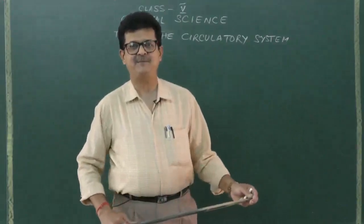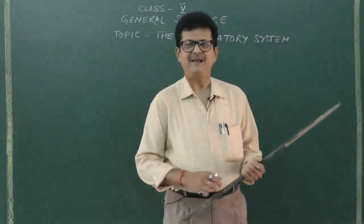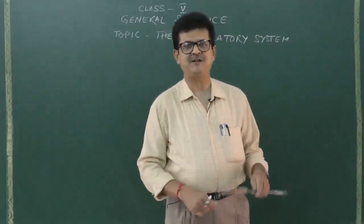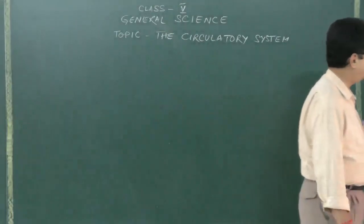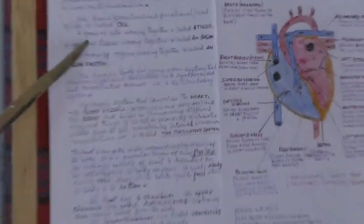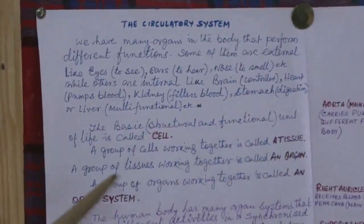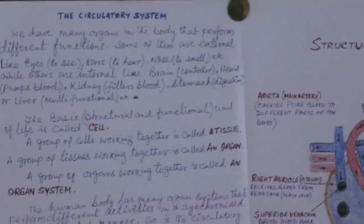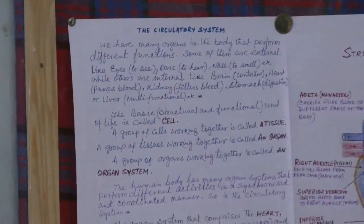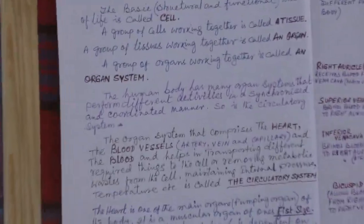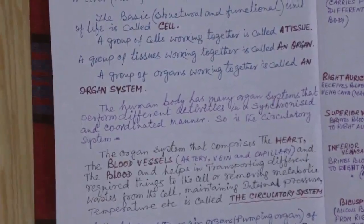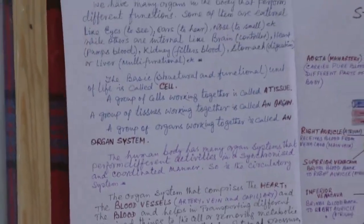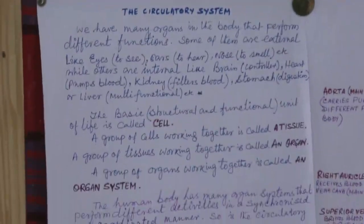Cell is the basic unit of life — the structural and functional unit of life is called the cell. A group of cells working together we call a tissue. A group of tissues working together we call an organ. A group of organs working together we call an organ system. The human body is made up of quite a few organ systems, like the integumentary system, the muscular system, the skeletal system, the reproductive system, the respiratory system, and the circulatory system.